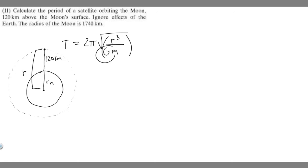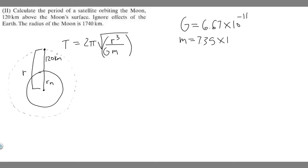G is the gravitational constant, and it's just going to be a number you have to memorize: 6.67 times 10 to the minus 11. That's your gravitational constant. M is going to be the mass of the moon — also something I recommend memorizing. If you look it up, it's 7.35 times 10 to the 22 kilograms. So this is the mass of our moon.